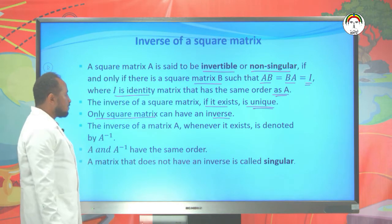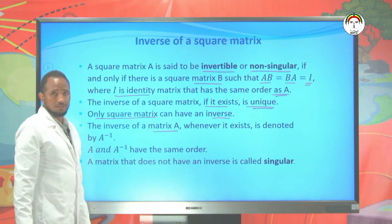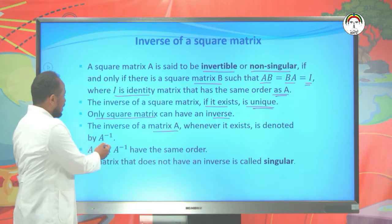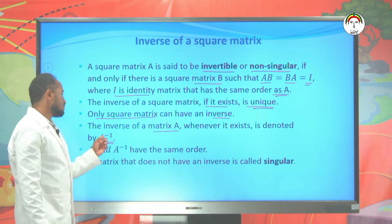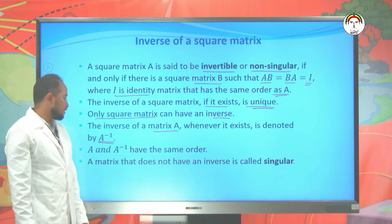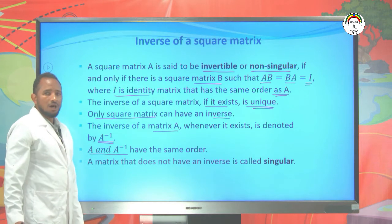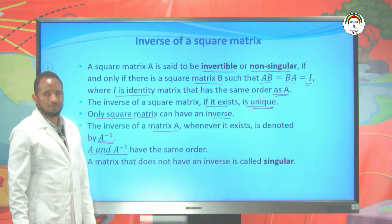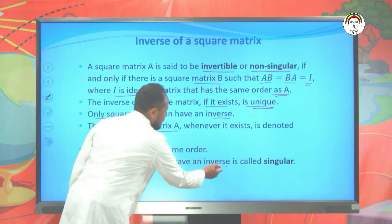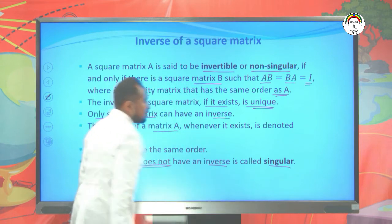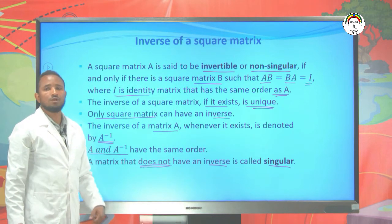The inverse of a matrix A, whenever it exists, is denoted by A to the power of minus one, read as A inverse. A and A inverse have the same order. A matrix that does not have an inverse is called a singular matrix.